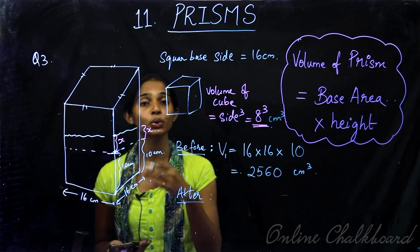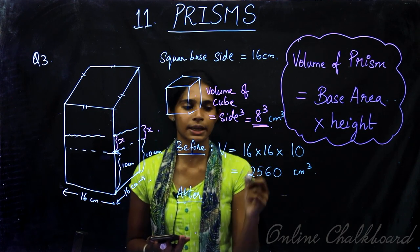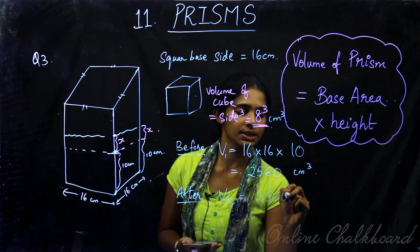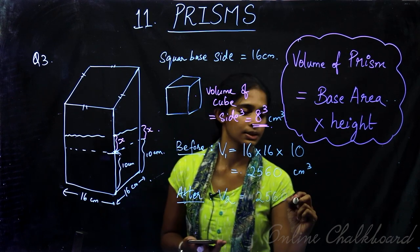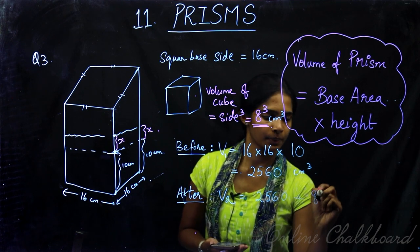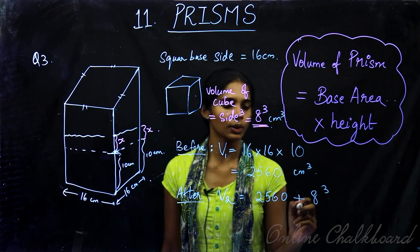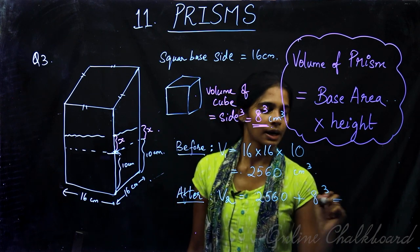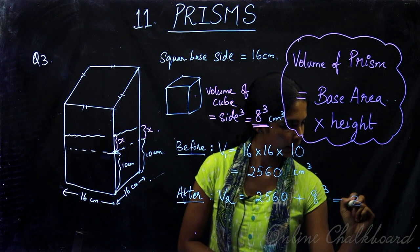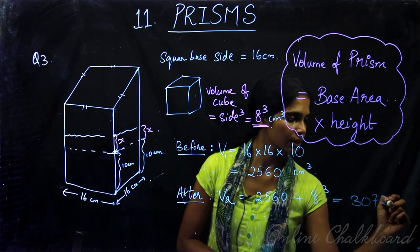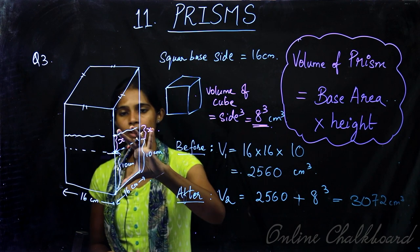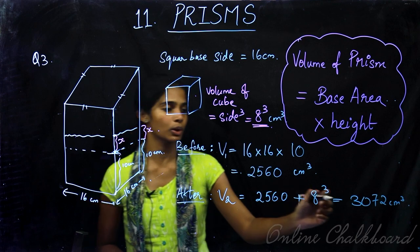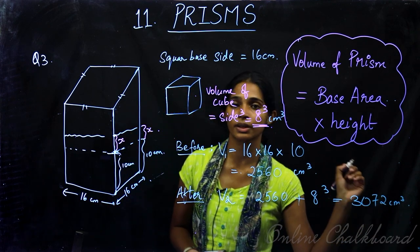After immersing the cube, the new volume equals the old volume plus the volume of the cube: V2 = 2,560 + 8³ = 2,560 + 512 = 3,072 cm³. So the total volume after immersing is 3,072 cm³.